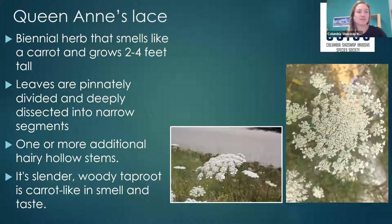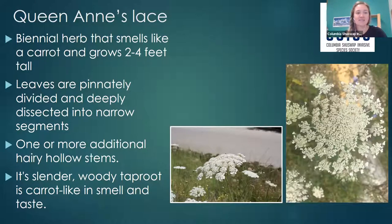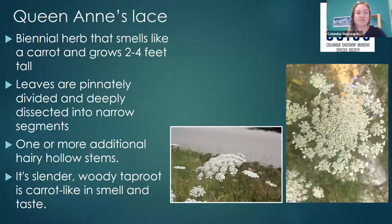The next plant is called Queen Anne's Lace. It's a biennial herb that grows two to four feet tall and apparently smells and tastes like carrot. Its leaves are pinnately divided into deeply dissected narrow segments, giving it a really feathery, delicate look. The stems are hairy and hollow and it has a slender woody taproot. It often has just one solitary pink or purple flower in the middle of the inflorescence.